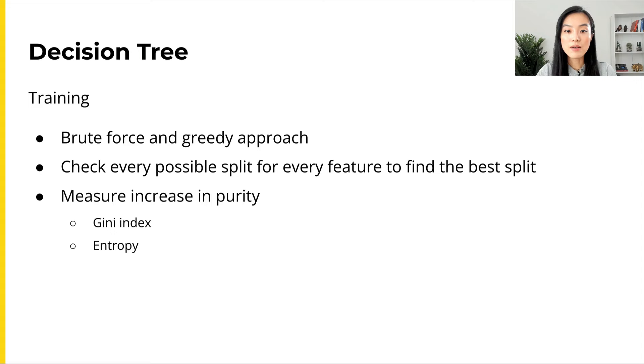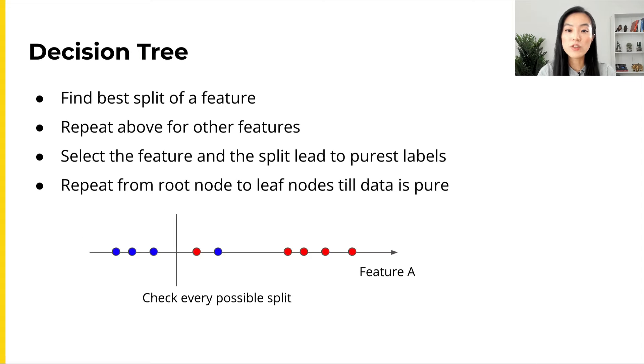Now let me give you an example to illustrate it. First, we need to find the best split of a feature, let's say feature A. We can sort the data set based on the feature and check every possible split between two adjacent values. For each split, we will measure the increase in the label purity resulting from that split.